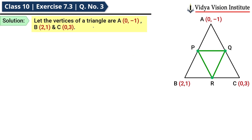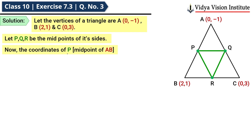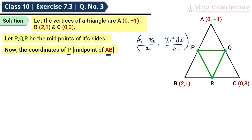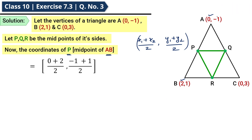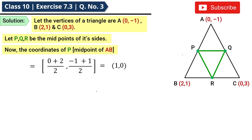Let the vertices of triangle ABC be A(0, -1), B(2, 1) and C(0, 3). Now, let P, Q, R be the midpoints of its sides. The coordinates of P, that is the midpoint of AB — the midpoint formula is (x1 + x2)/2 and (y1 + y2)/2. So here x1 = 0, x2 = 2, giving (0 + 2)/2. And y1 = -1, y2 = 1, giving (-1 + 1)/2. So P = (1, 0).